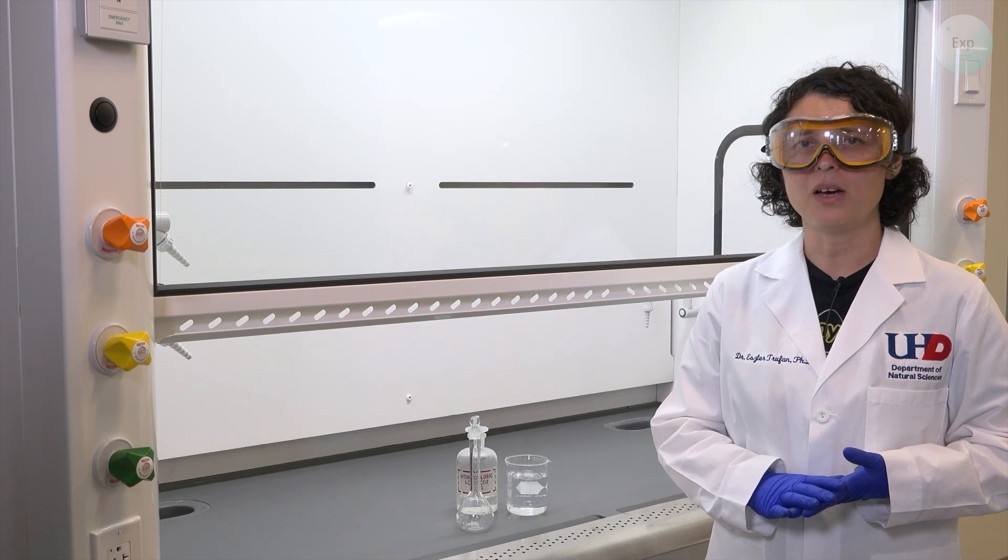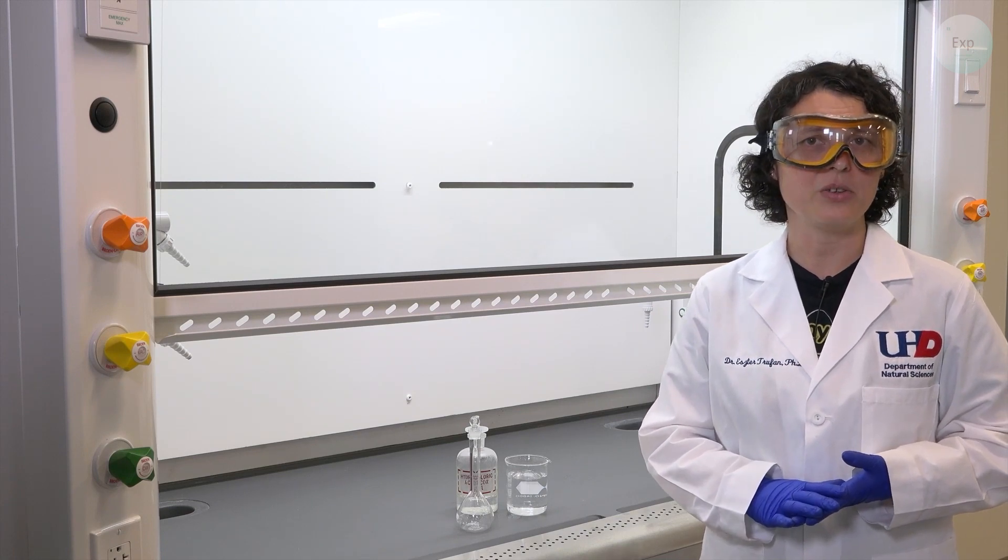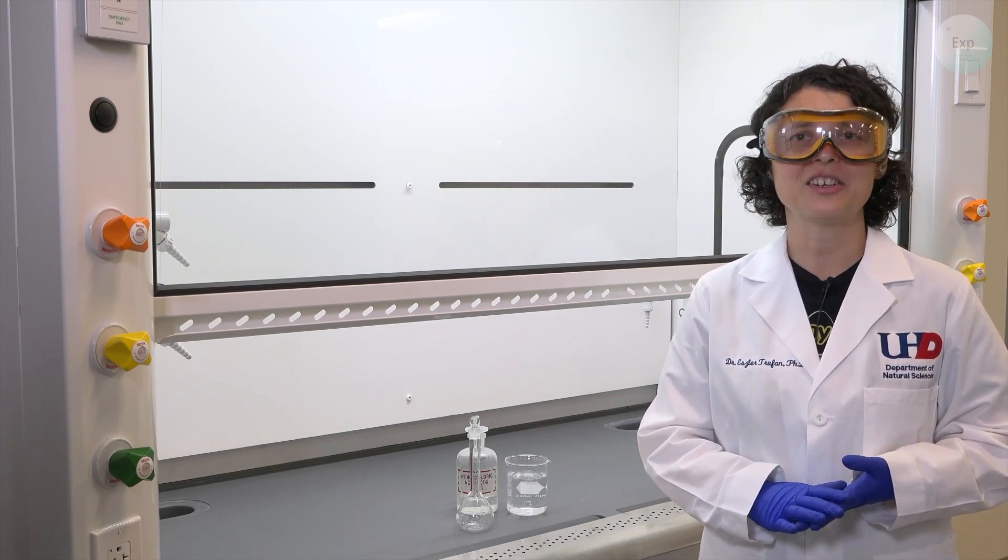We need to know the exact volume of concentrated hydrochloric acid that we're using, so we will need a 10 milliliter graduated cylinder.